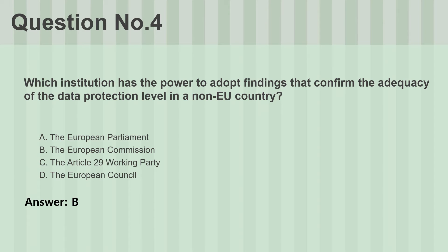Question number four. Which institution has the power to adopt findings that confirm the adequacy of the data protection level in a non-EU country? A. The European Parliament. B. The European Commission. C. The Article 29 Working Party. D. The European Council. Answer: B.